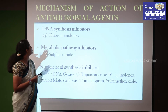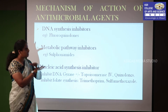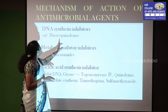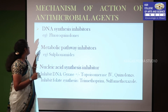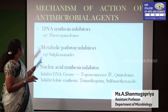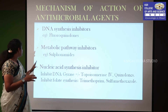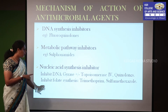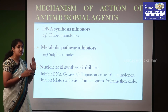Next mechanisms of action include DNA synthesis inhibitors. DNA is a genetic material that forms a double strand in the nucleus; for example, fluoroquinolones. Metabolic pathway inhibitors work by inhibiting enzymes in the metabolic process; for example, sulfonamide. Nucleic acid synthesis inhibitors include those inhibiting DNA gyrase and topoisomerase under quinolone antibiotics, and inhibiting folate synthesis such as sulfamethoxazole.